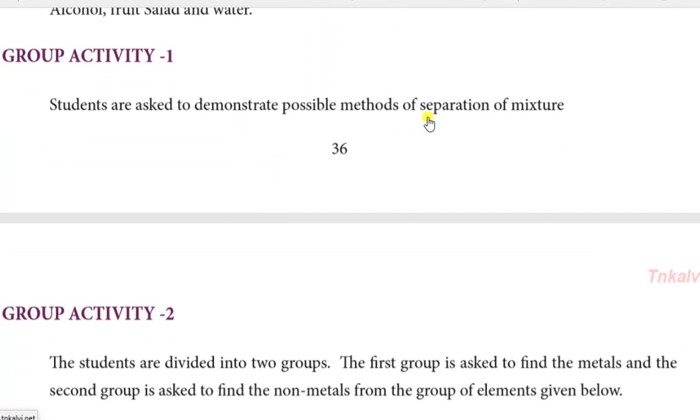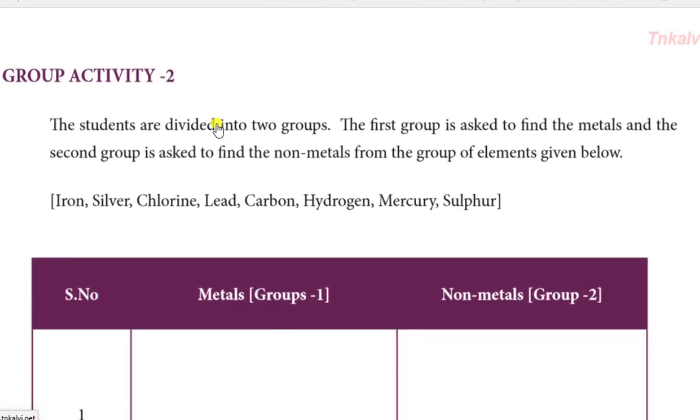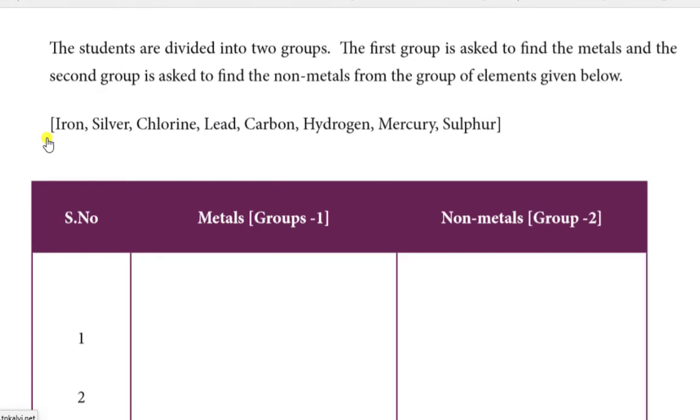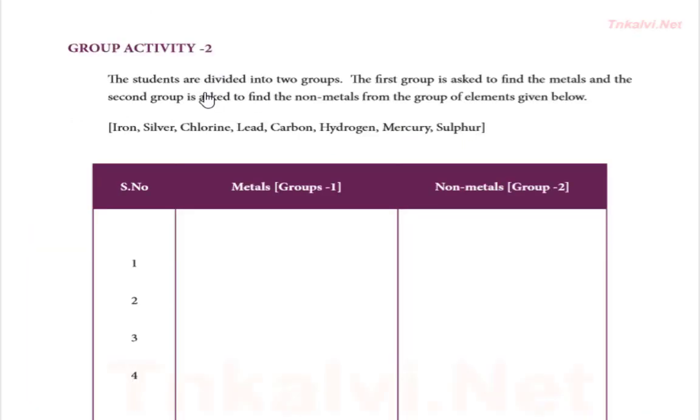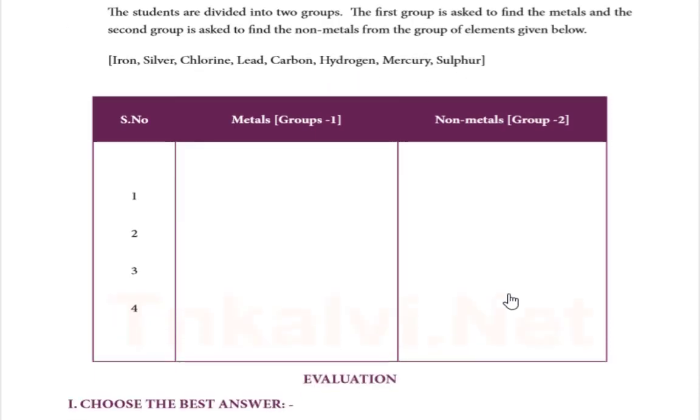Then you can demonstrate the separation mixture methods. Tea filtration, hand picking and winnowing for rice, pulses, and dirt particles. You can demonstrate magnetic separation. Next, demonstrate the differences between metals and non-metals. Iron, silver, lead, mercury are metals. Fluorine, carbon, hydrogen, sulfur are non-metals. You can write this in a table column.